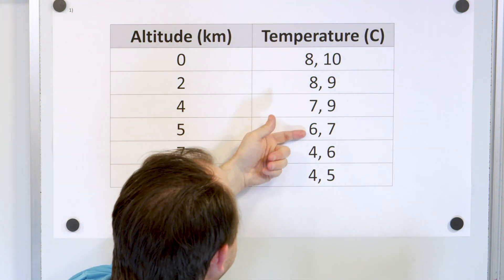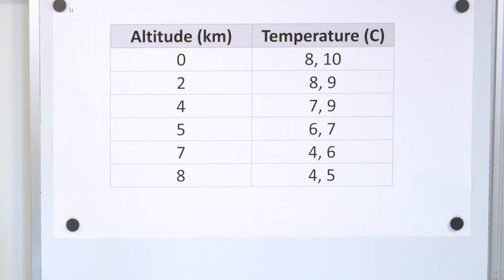Now you can see that as the altitude goes up, the temperature in general goes down. So let's see how something like this would look on a scatter plot.